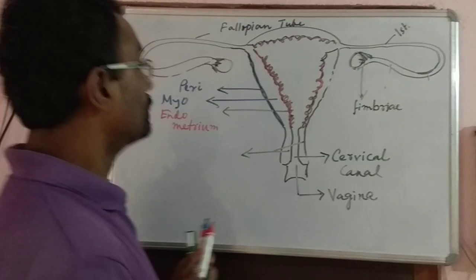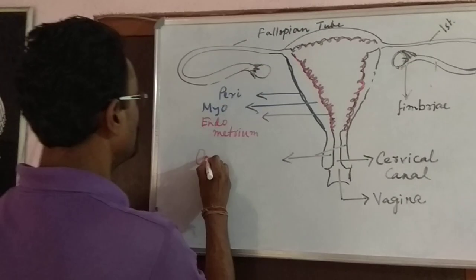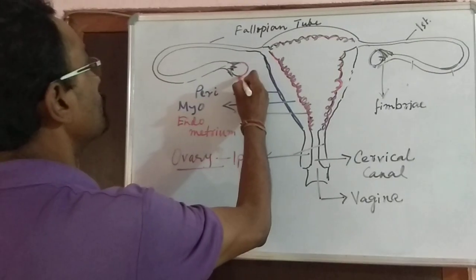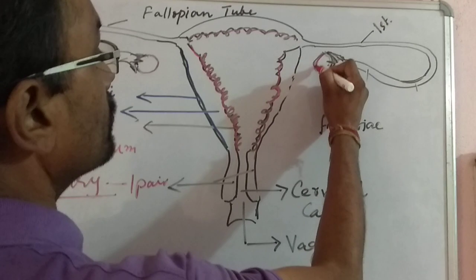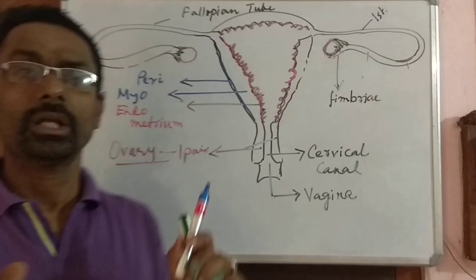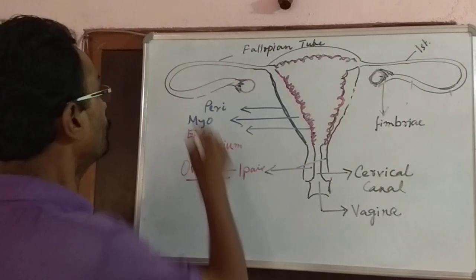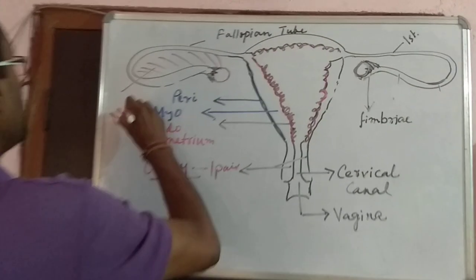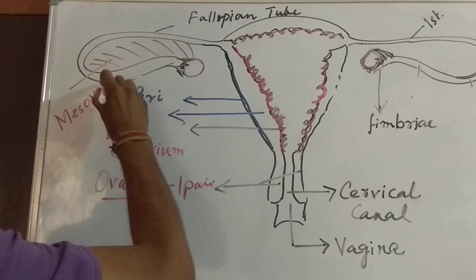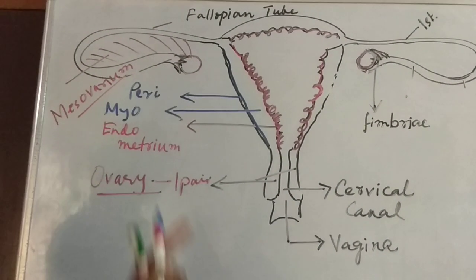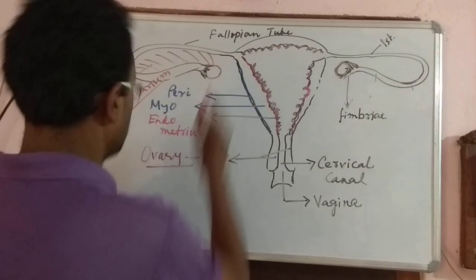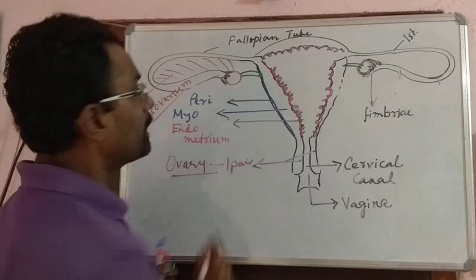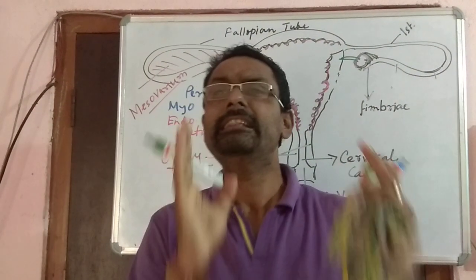Now let's come to the ovary. There is one pair of ovaries — this is one ovary and this is another ovary. The ovaries are connected by a structure called the mesovarium — M-E-S-O-V-A-R-I-U-M — and are connected with the uterus.